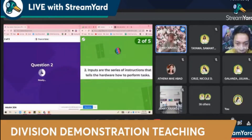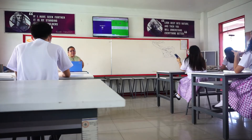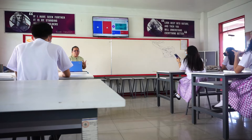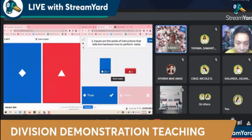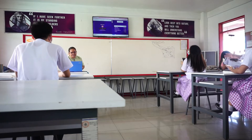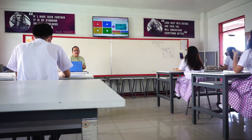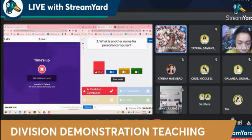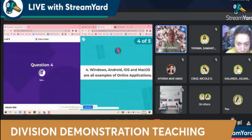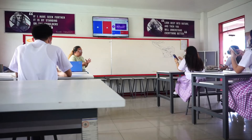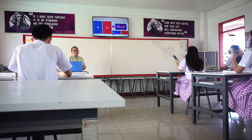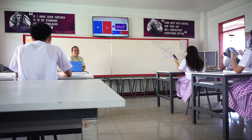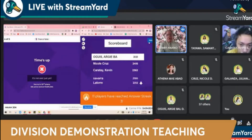Number two, true or false: inputs are the series of instructions that tell the hardware how to perform tasks. Blue is for true, red is for false — three, two, one, let's go! Twenty-nine got the correct answer. Number three: what is another name for personal computer? A. desktop computer, B. server, C. hardware, D. CPU. And number four: Windows, Android, iOS, and Mac OS are examples of online applications — true or false? The answer is false.